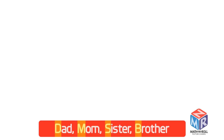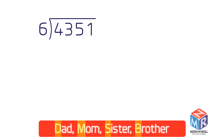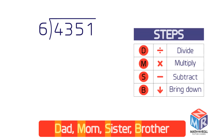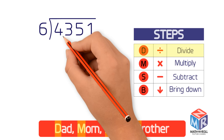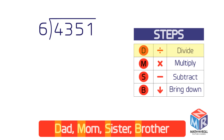Let's try another example: divide 4,351 by 6. To begin, ask how many times 6 goes into 4. None — because the first digit taken by itself is less than the divisor; 4 is less than 6. Write 0 or just leave a space above the 4.